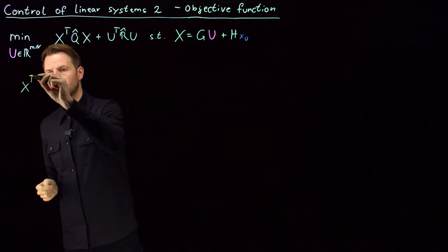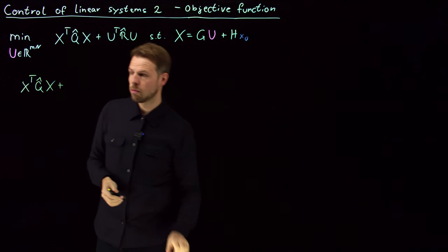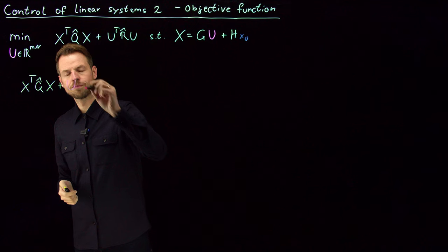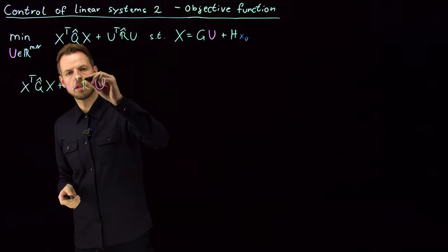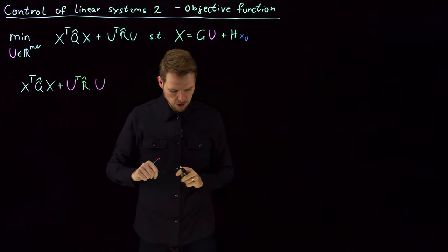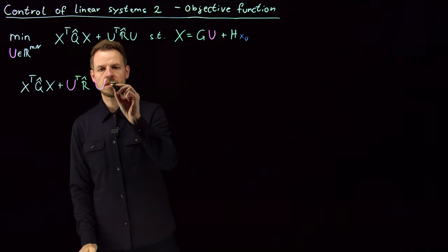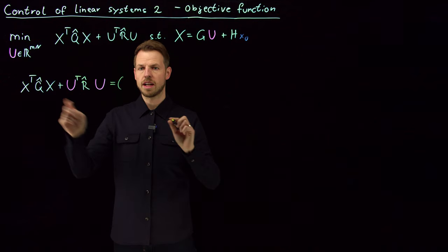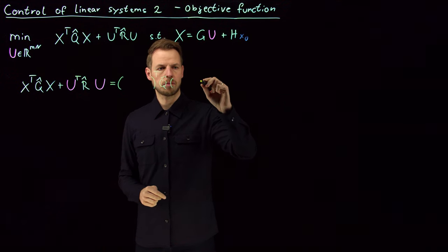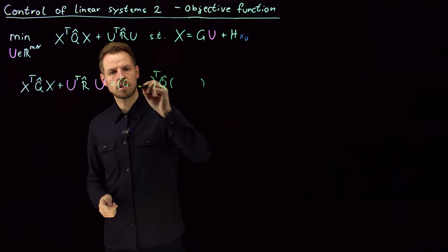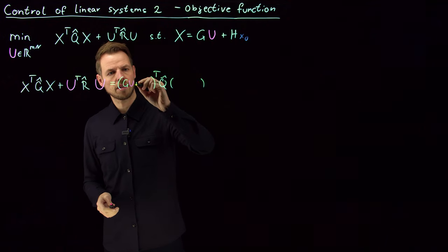We have x transpose Q hat x plus, and I'm going to try to make this color coded for the U matrix to keep track of what we're doing. So U transpose, this is my control penalization, times U. What I'm going to do is insert for x this expression. So what I get is, I get instead of the x, this expression times Q hat times this expression again. So this is GU plus H times x0.